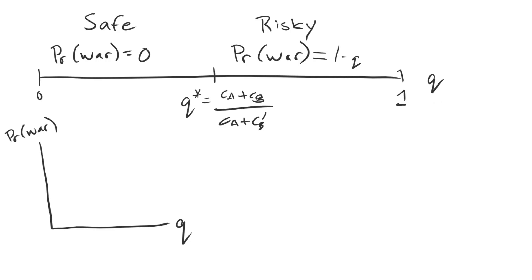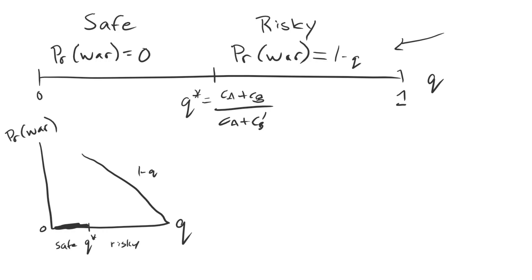In the first case, Q* is less than one-half — so the risky demand is made to the right of Q* and the safe demand to the left. If Q is less than Q*, the probability of war is zero — I'll darken that region to reflect that. At Q*, we flip from the safe demand to the risky demand, and the risky demand has a probability of war of 1 minus Q. So everything to the right of Q* has a probability of war of 1 minus Q, which is a downward-sloping line from that point.